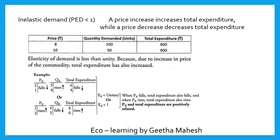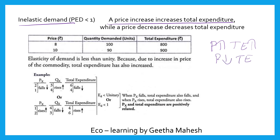Next is inelastic demand, or less elastic demand, where elasticity of demand is less than 1. When price increases, total expenditure also increases. When price decreases, total expenditure also decreases. In this situation, elasticity of demand is less than 1 and the consumer is less sensitive to price changes.